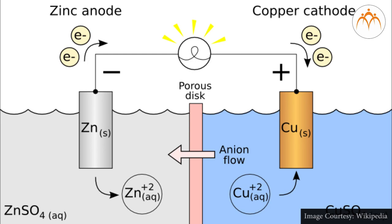At the other electrode there is a similar equilibrium with the opposite charge separation, giving a balance between ions being deposited on the electrode and dissolved. This gives oppositely charged electrodes with a potential difference between them. When an external conducting path between the two electrodes is connected, it can supply electrons to one electrode and extract them from the other, destroying the previous equilibria and providing a current in the external circuit.